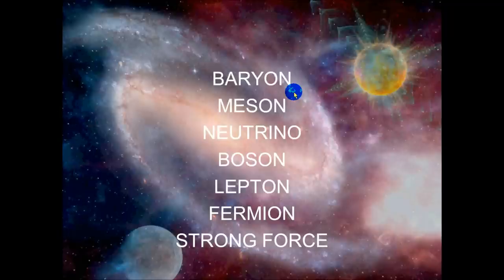A baryon is a subatomic particle, such as a nucleon or a hyperon, that has a mass equal to or greater than that of a proton. Hadrons are made up of three quarks, such as a proton, a neutron, and so on. Those are examples of baryons, because they're all made up of three quarks. A meson is a subatomic particle that is intermediate in mass between an electron and a proton.